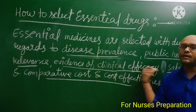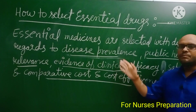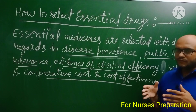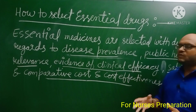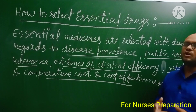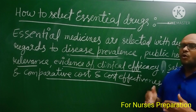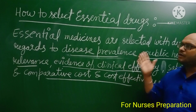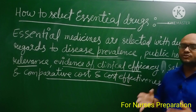To understand the criteria of essential drug selection, we study five important points. First is prevalence — prevalence means important or found in majority. All the diseases found in majority in a community or country, all the drugs essential to treat such diseases must come in the essential drugs list.